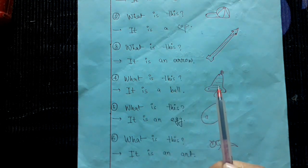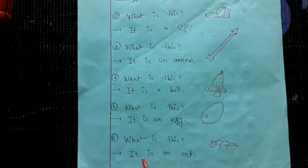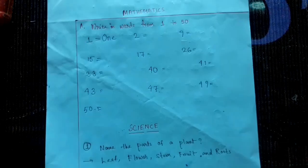this? It is a bell. What is this? It is an egg. What is this? It is an ant.